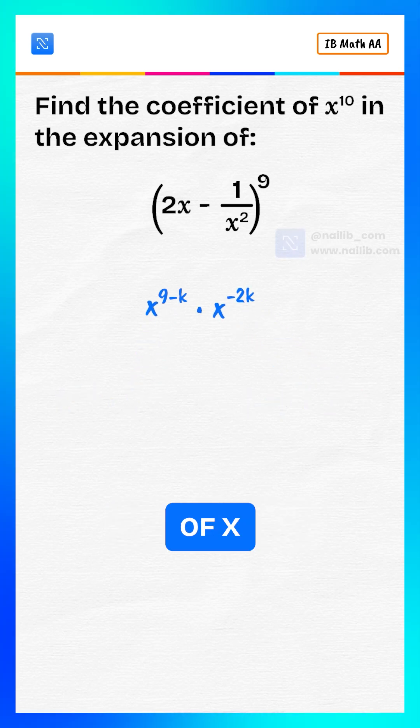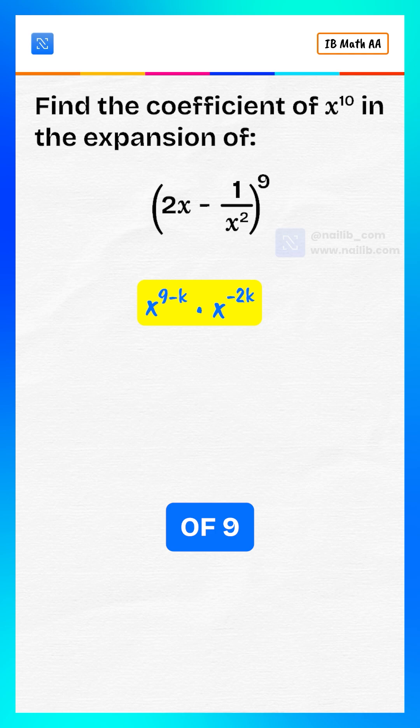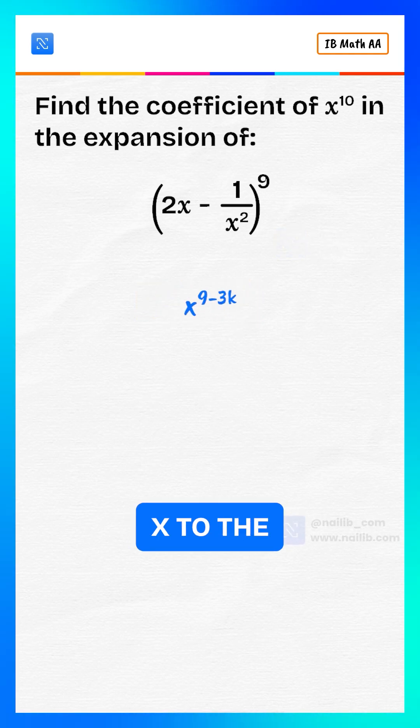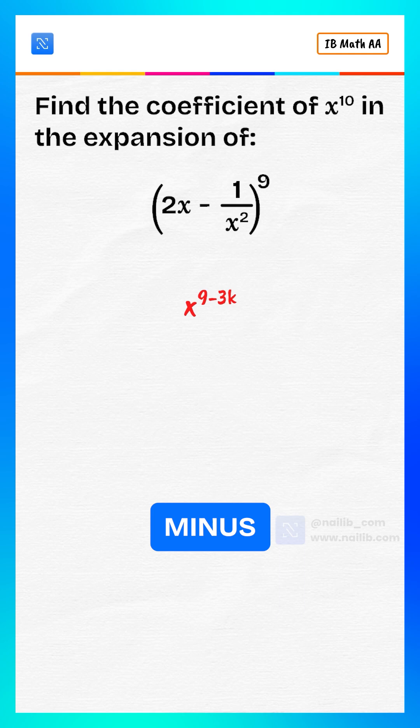Combine the powers of x. X to the power of 9 minus k minus 2k equals x to the power of 9 minus 3k.